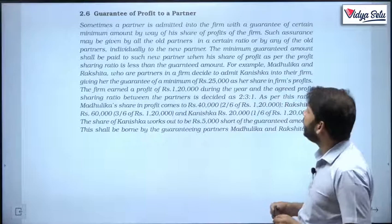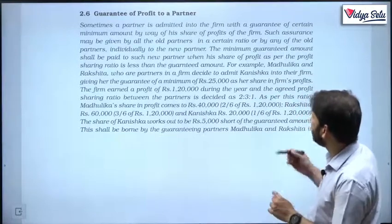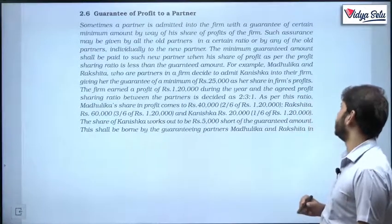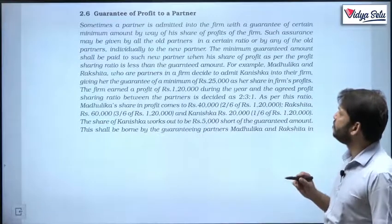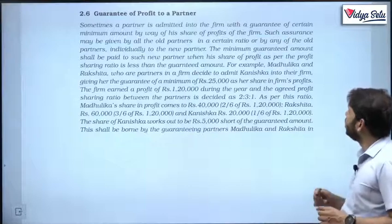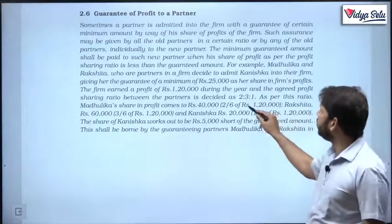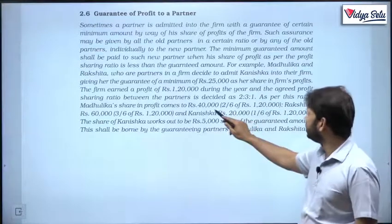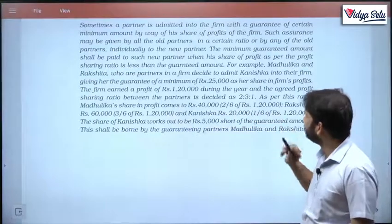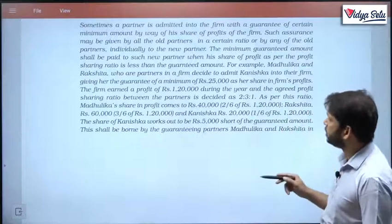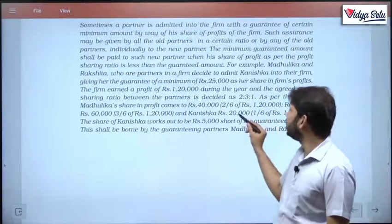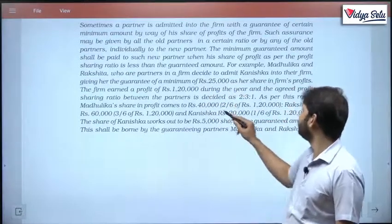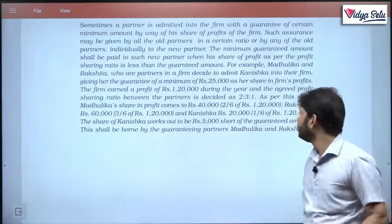For example, Madhulika and Rakshita, who are partners in a firm, decide to admit Kanishka into their firm, giving her a guarantee of minimum 25,000 as a share in the firm's profit. The firm earned a profit of rupees 1,20,000 during the year. The agreed profit sharing ratio was 2:3:1. As per this ratio, Madhulika's share came to 40,000, Rakshita's 60,000 and Kanishka's 20,000. Kanishka is only getting 20,000 whereas she was guaranteed 25,000, so she has a shortfall of 5,000.